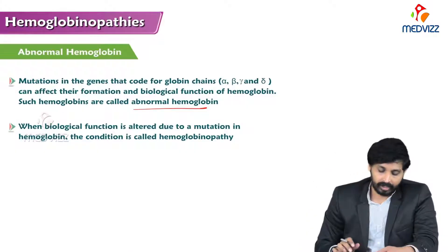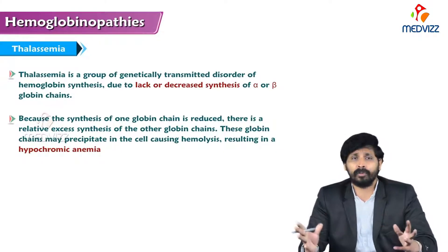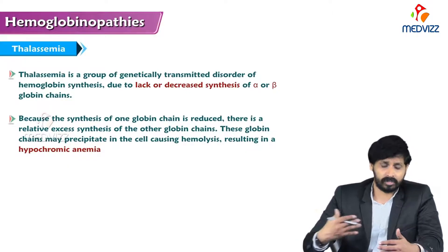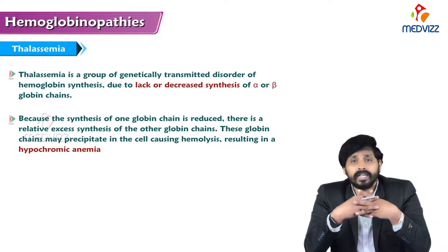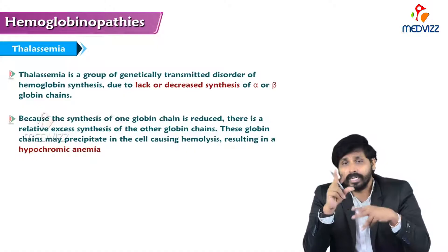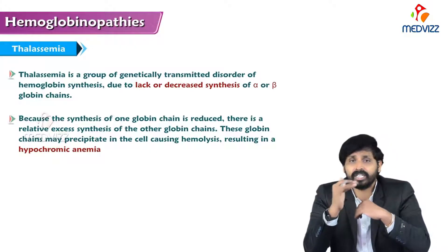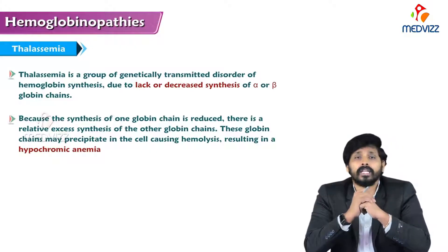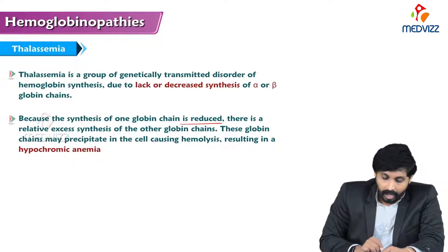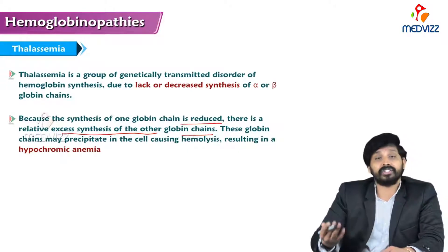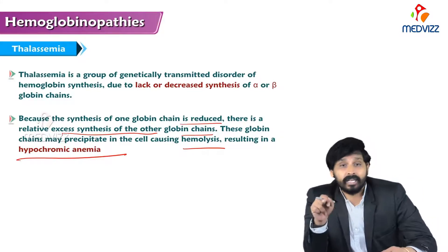Thalassemia is a group of genetically transmitted disorders of hemoglobin synthesis due to lack or decreased synthesis of alpha or beta globin chains. It is of two types: alpha thalassemia and beta thalassemia. Because the synthesis of one globin chain is reduced, there is relatively excess synthesis of other globin chains. These excess globin chains may cause hemolysis within the cell, resulting in hypochromic anemia.